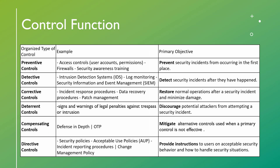Looking at the summary diagram: preventive control such as access control has the ultimate goal of preventing security incidents from occurring in the first place. Detective controls like IDS, log monitoring, and SIEM detect security incidents. Corrective controls like incident response return systems to normal operation after an incident. Deterrent gives warnings. Compensating can be defense-in-depth — layered controls where if one layer fails another blocks the threat. Directive controls include security policies and acceptable use policies that give instructions.